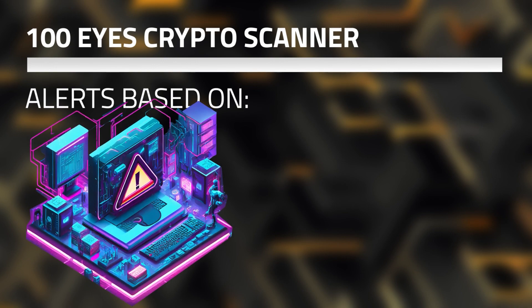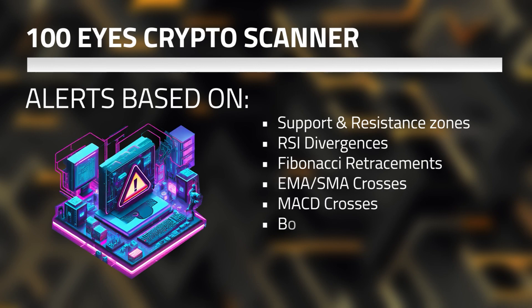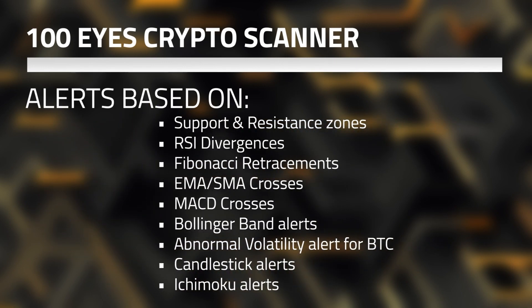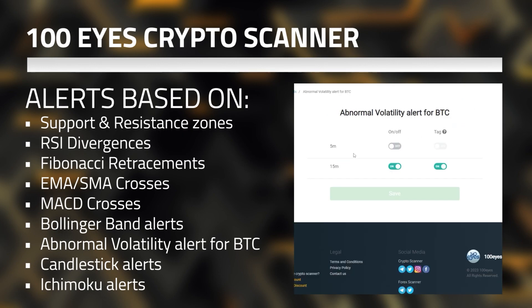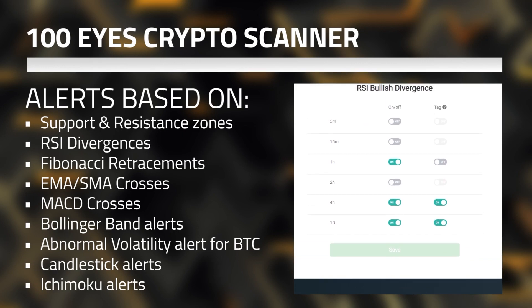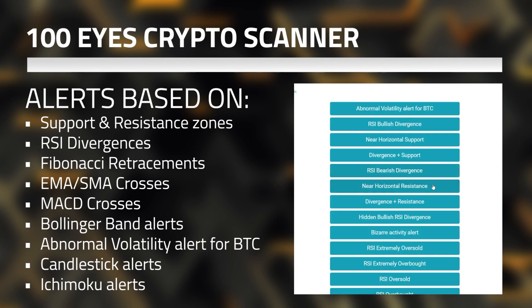The range of alerts you can set is spectacular. There are different alerts for support and resistance zones, RSI divergences, Fibonacci retracements, EMA, SMA crosses, MACD crosses, Bollinger Band alerts. There is also a separate one for abnormal volatility alerts, candlestick alerts, Ichimoku alerts, and the list goes on. You can basically select the time frame you want to apply it for. It is suitable for both high and low frequency trading. Whenever I trade on my personal account, I usually consider the RSI divergences with some Bollinger Bands and trade based on those alerts.